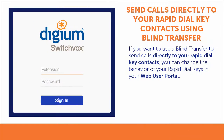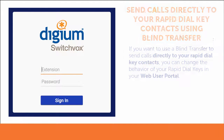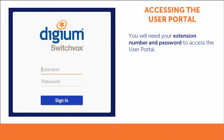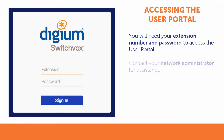If you want to use a blind transfer to send calls directly to your Rapid Dial key contacts, you can change the behavior of your Rapid Dial keys in your web user portal. To access the user portal, you will need your extension number and password. If you do not have this information, please contact your network administrator for assistance.